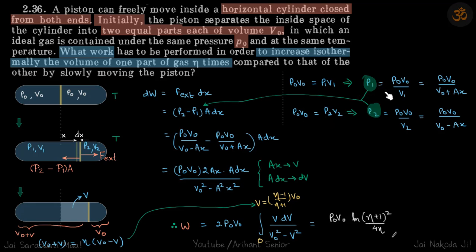So from there, we get the values of P1 and P2. And so V1 also we can write as V0 plus AX. So V1 is this complete volume, that is V0 plus this volume that is AX. And V2 is again V0 minus AX. So that's what we have done.